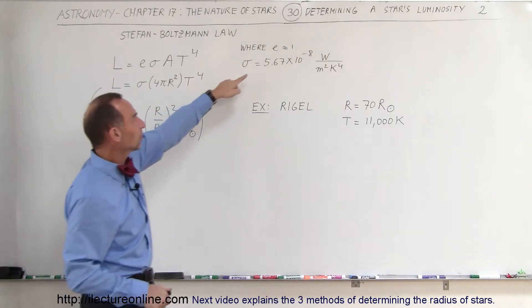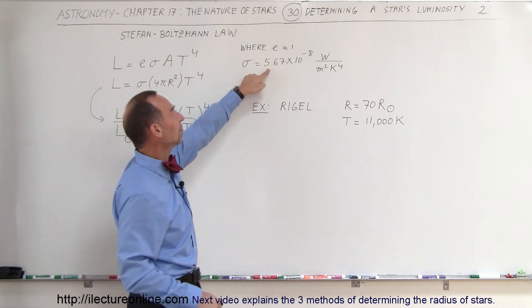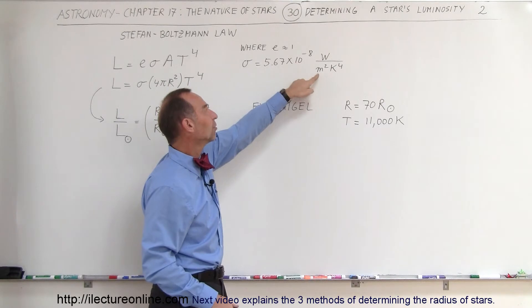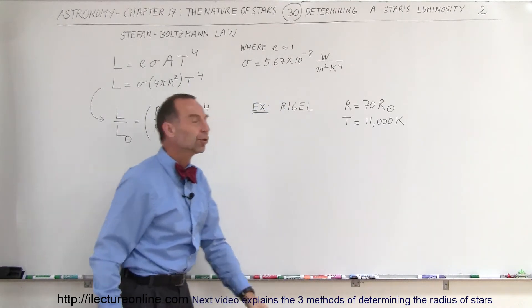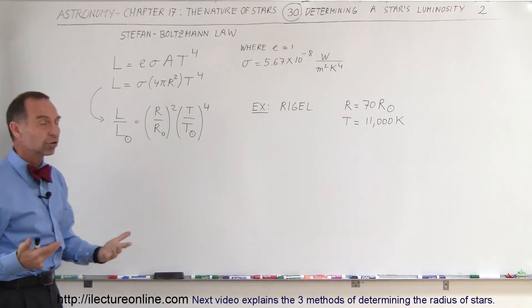Boltzmann's constant was experimentally determined to be 5.67 times 10 to the minus 8 watts per square meter per Kelvin to the fourth power. So the units come out to be watts.